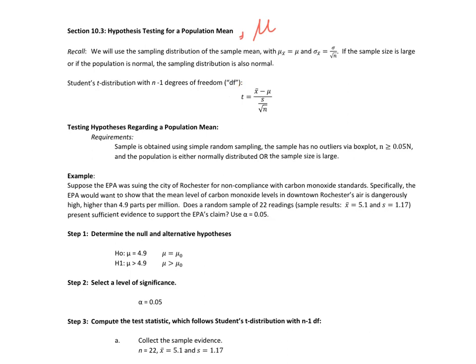This is the same stuff we did for confidence intervals for mu. So when we're testing hypotheses regarding a population mean, our requirements are going to be the same. Sample is obtained using a simple random sample, SRS.